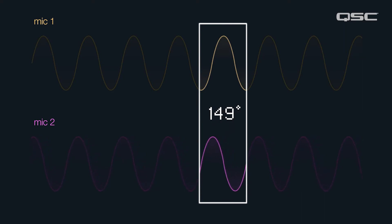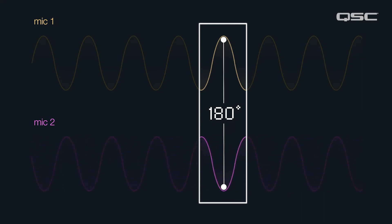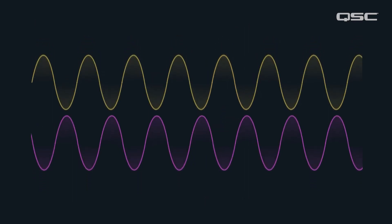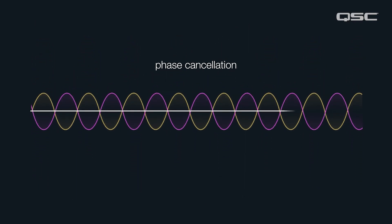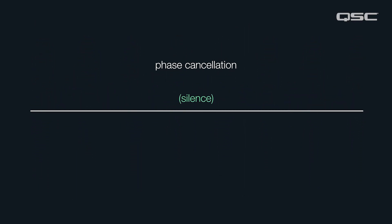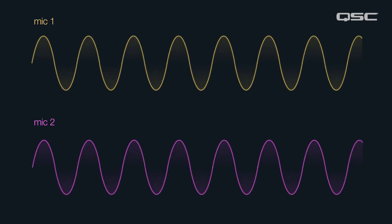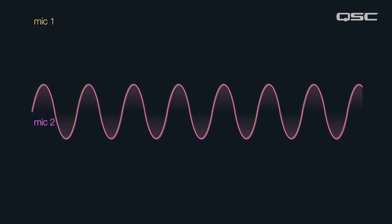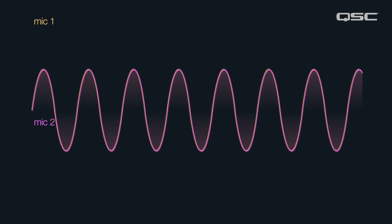Meaning the wave's peaks and dips cycle in opposition to each other. The result is near complete cancellation of the two waveforms. Weird, right? Physics is crazy. On the other hand, if two identical signals interact that are perfectly in phase, the two signals will sum together and the sound is perceived to be 6 dB louder.